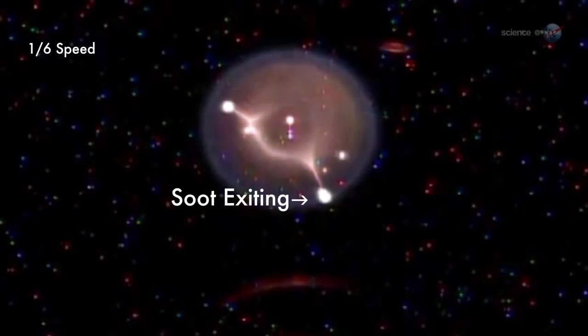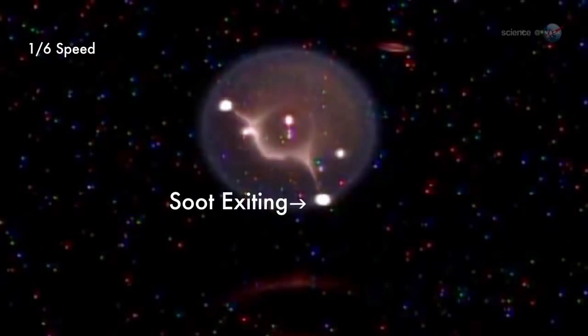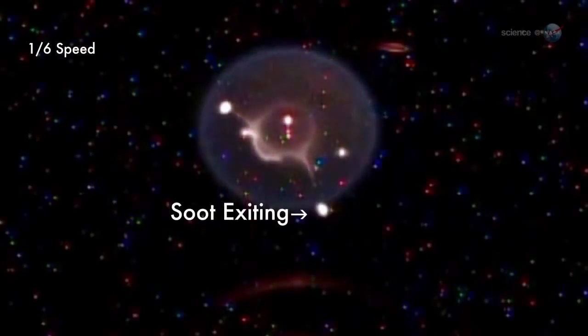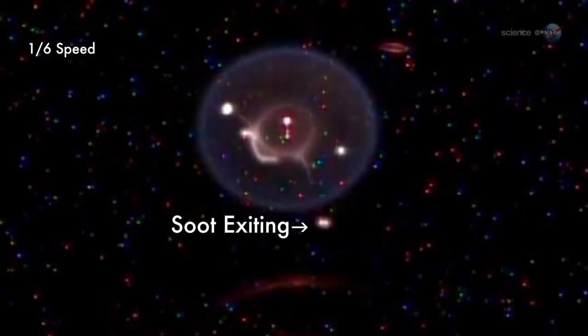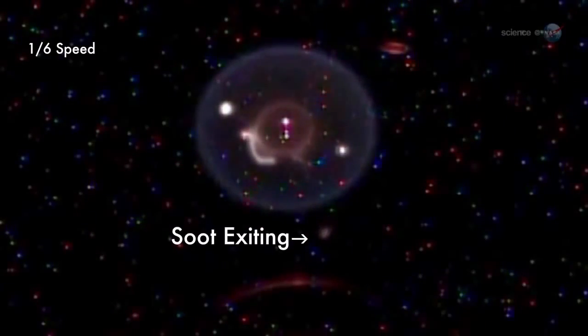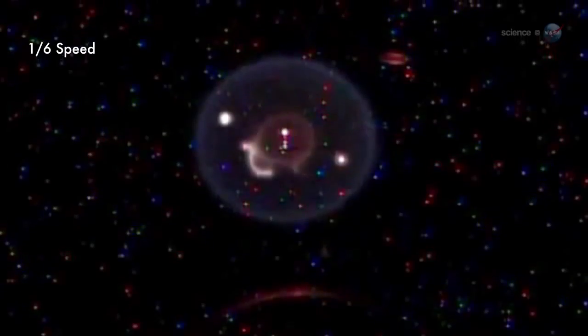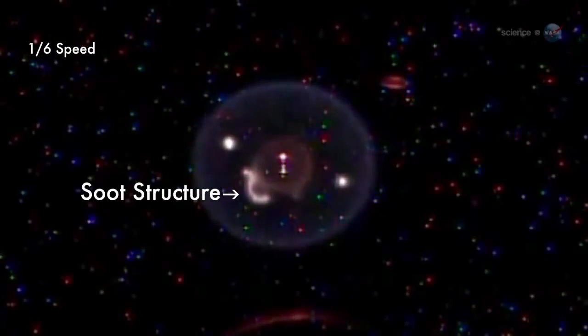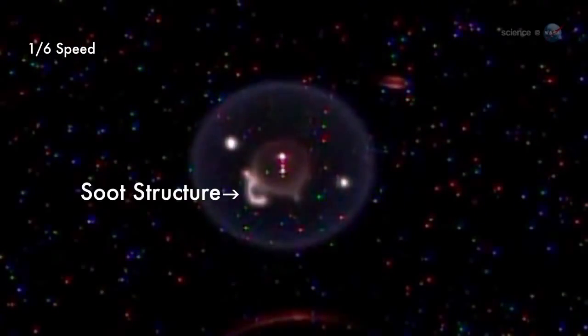Several globules of burning soot can be seen inside the sphere, he continues. At one point, a blob of soot punctures the flame sphere and exits. The soot that exits fades away as it burns out. There is also an S-shaped object inside the sphere. That is another soot structure, he says.